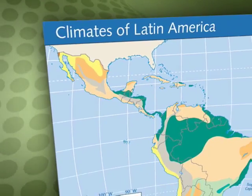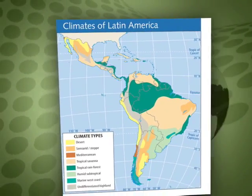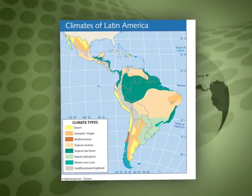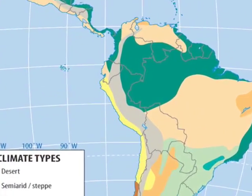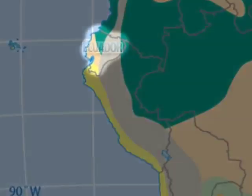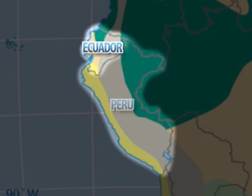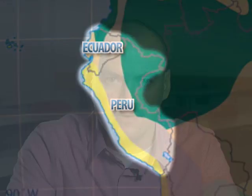Due to the combination of latitude and elevation, Latin American nations experience extreme differences in climate over very short distances. For example, in Ecuador and Peru, there are deserts and rainforests within just a few hundred miles of each other. These extreme environments have provided opportunities for European colonizers, but challenges to the Native Americans who were forced to the marginal lands.